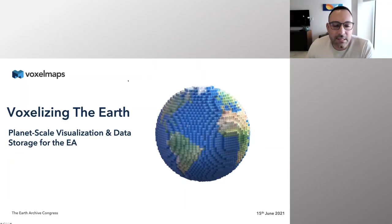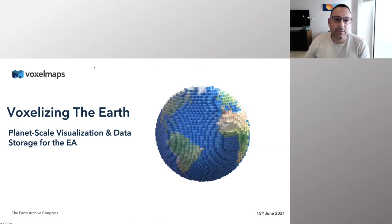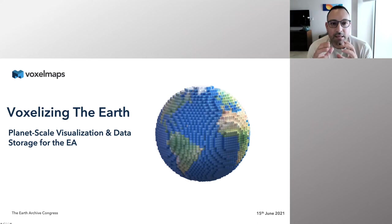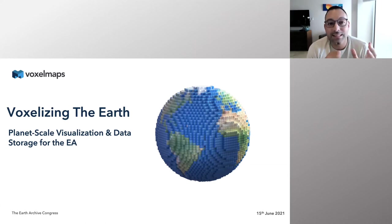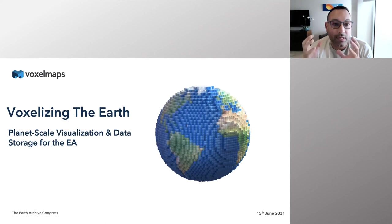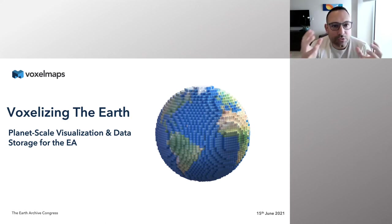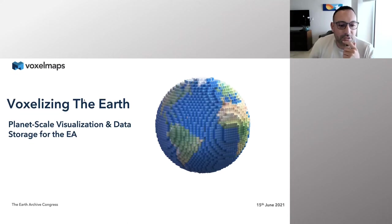Basically what we're doing at Voxel Maps — the way I'm structuring this presentation today — is the first part will be around Voxel Maps and voxel technology, kind of a 101 on voxels. The second part then is going to be the application to the Earth Archive and Earth Archive data, and we'll talk about some of these really cool applications.